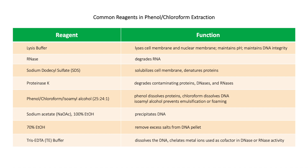Common reagents used in phenol-chloroform DNA extraction include: lysis buffer, used for cell membrane and nuclear membrane lysis — it maintains the pH of the solution and maintains DNA integrity; RNase, which degrades contaminating RNA; sodium dodecyl sulfate (SDS), which solubilizes cell membrane and denatures contaminating proteins; and proteinase K, for digestion of contaminating proteins, DNA-ases, and RNA-ases.